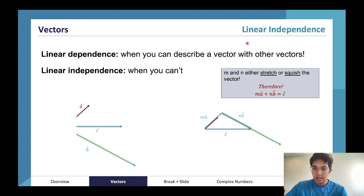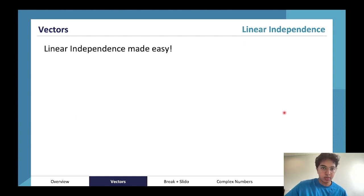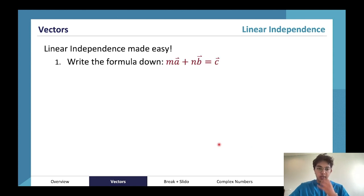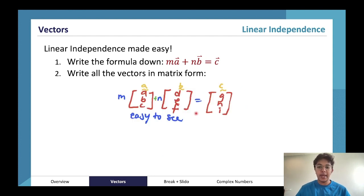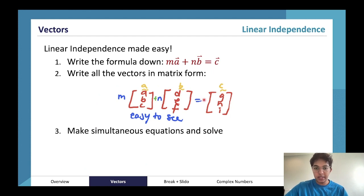So that is our rule here. To figure out linear independence, the first thing is we need to write our linear independence formula down, then write all our vectors in matrix form. The reason we do it in matrix form is because it's easier to see. Then multiply everything in and make a set of simultaneous equations and solve those for m and n.